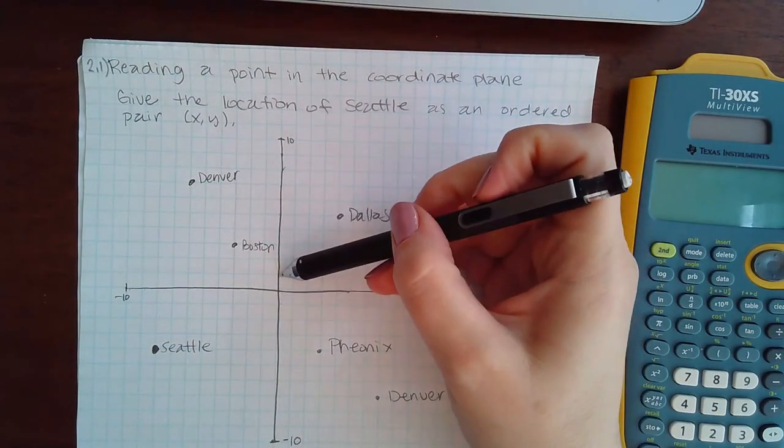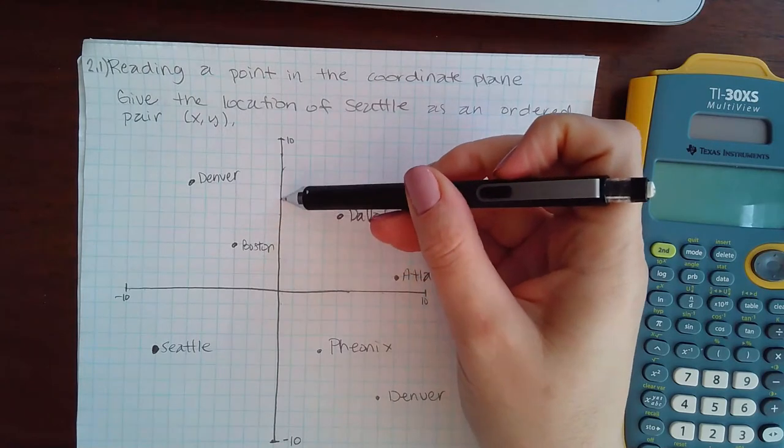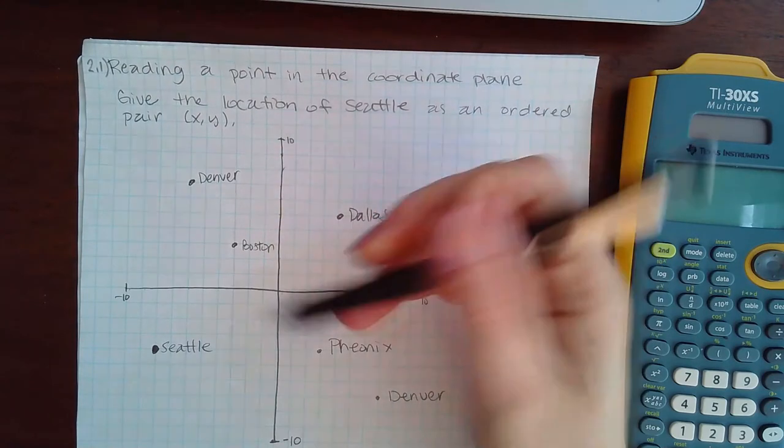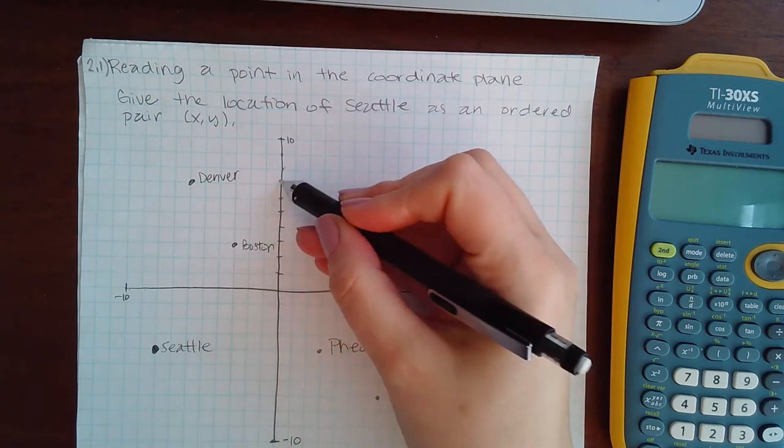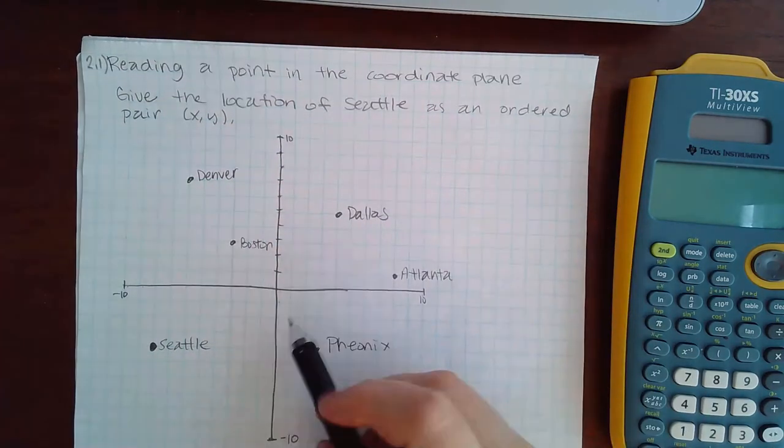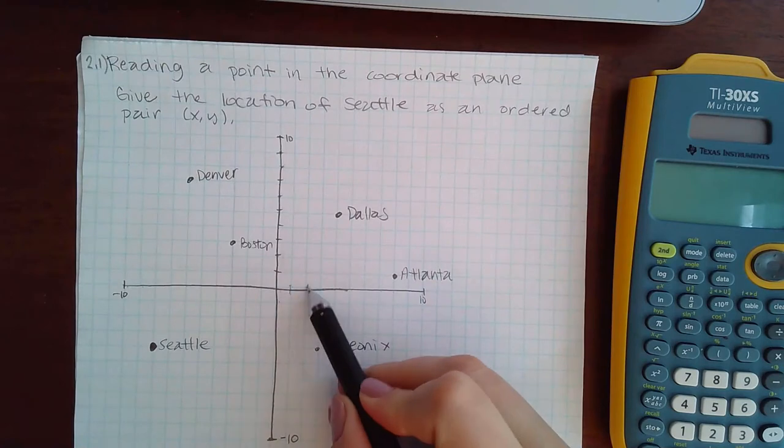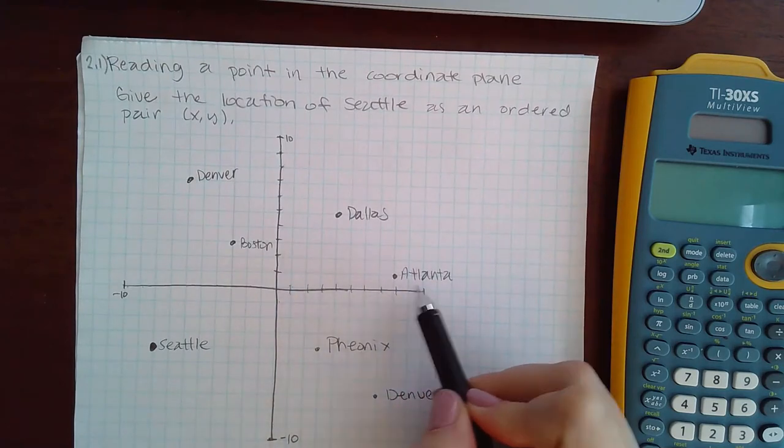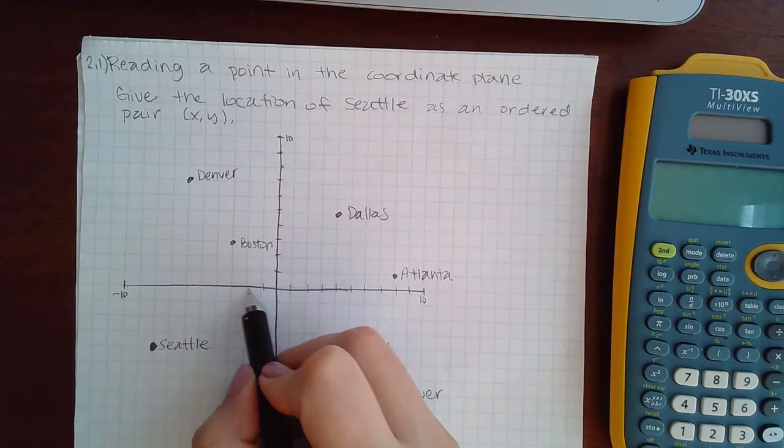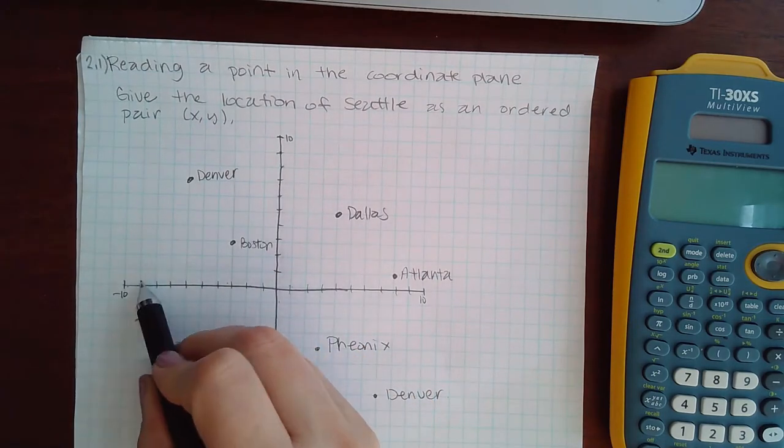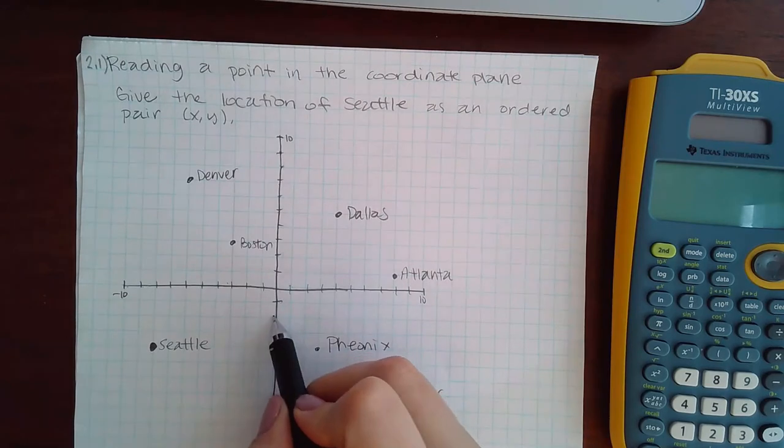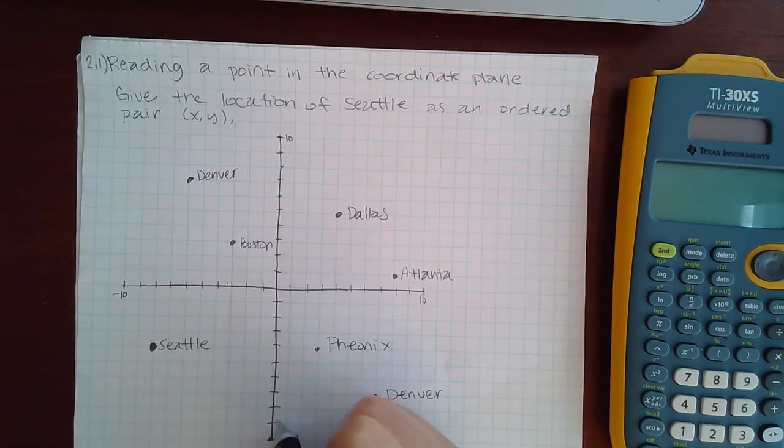10, so 1, 2, 3, 4, 5, 6, 7, 8, 9, 10. So each little marker is one unit. Then same thing going this way: 1, 2, 3, 4, 5, 6, 7, 8, 9, 10. So if I...